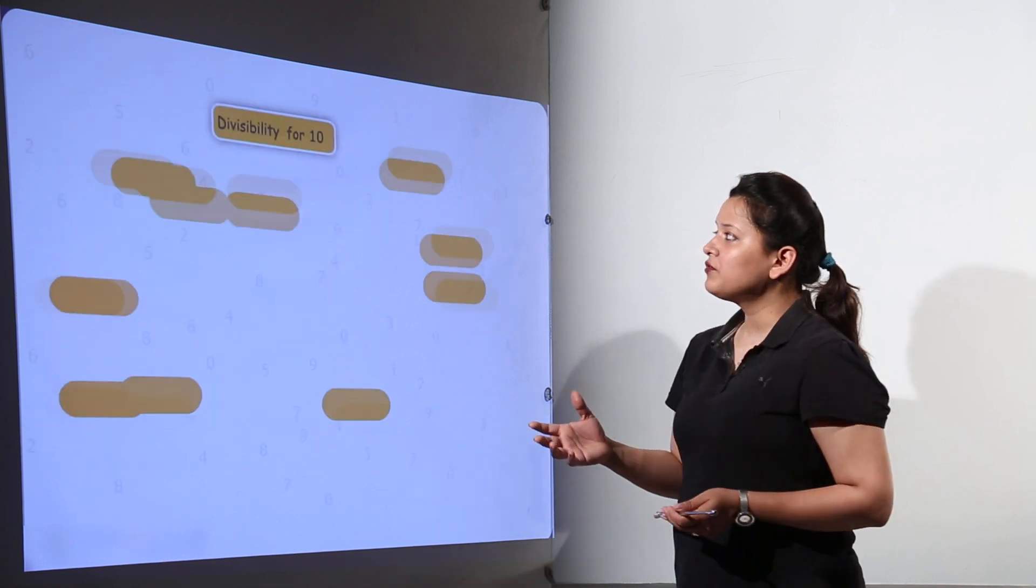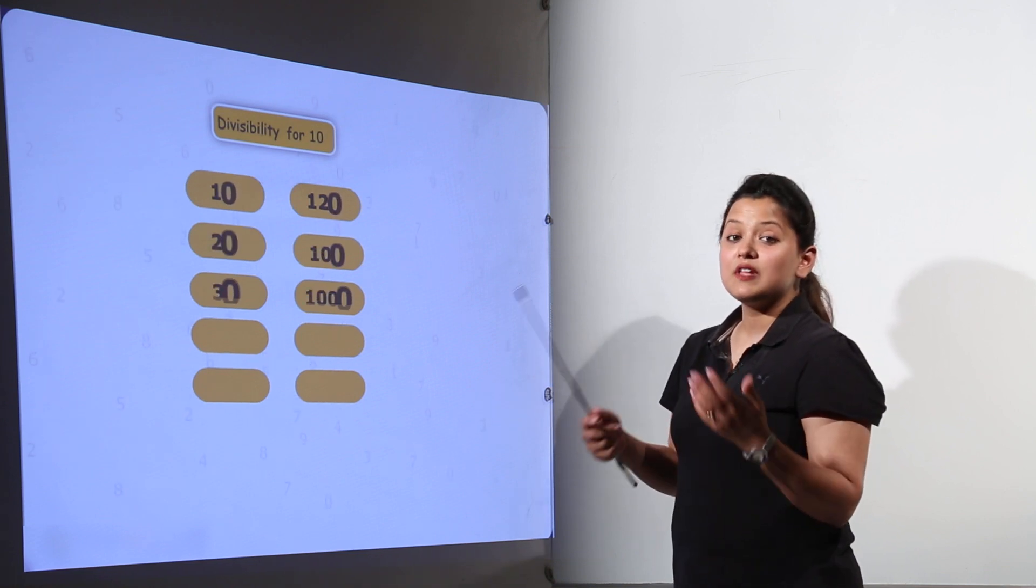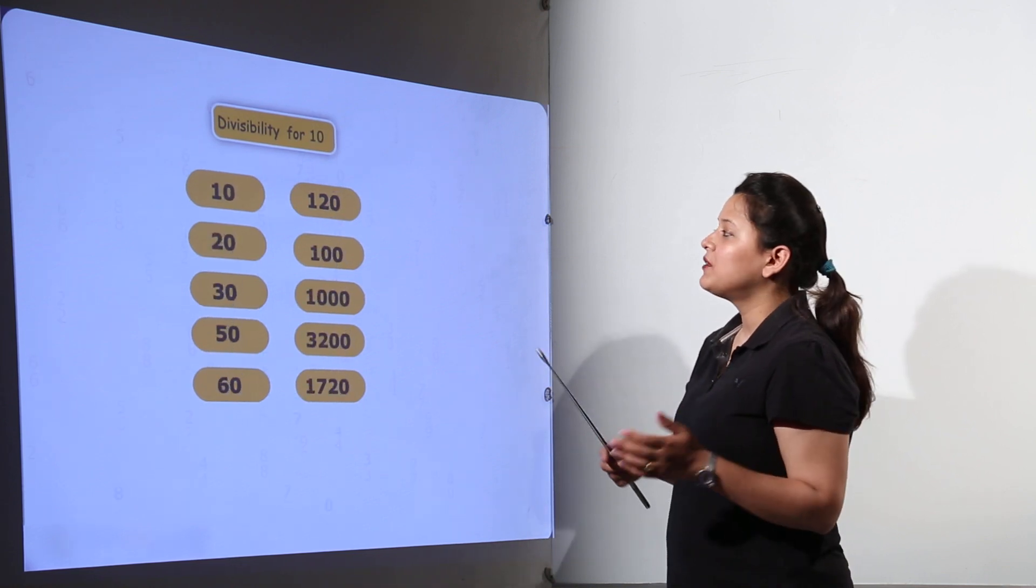For divisibility by 3, you just check the sum of digits. If that is divisible by 3, the number will be divisible by 3.